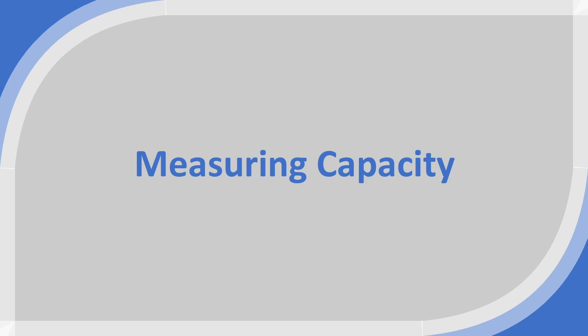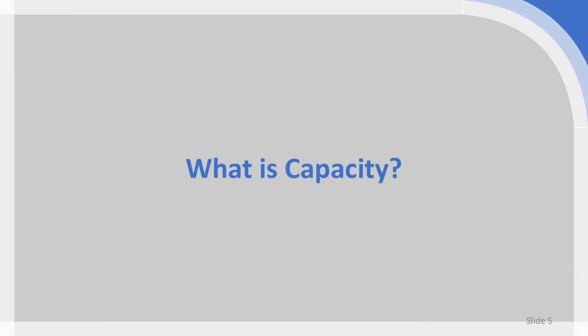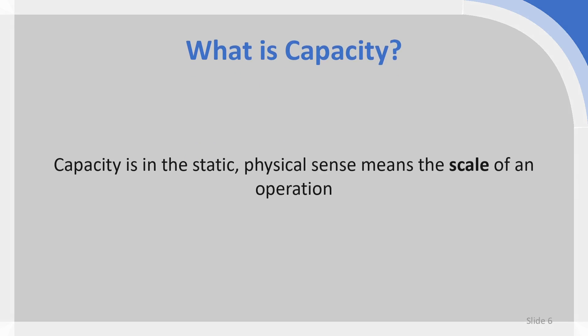So if we tackle the first question — what is capacity? It is something which is really at the core of operations. Operations management is defined as the management of the production and delivery of products and services. And capacity is really the scale at which you can produce and deliver goods and services.